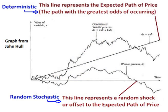Therefore, the movement of the price of an asset, such as a stock, follows a continuous Brownian motion, which is sometimes referred to as a Wiener process.